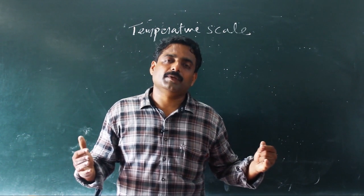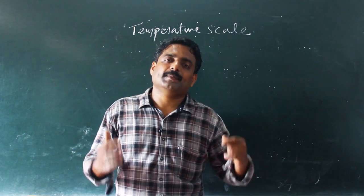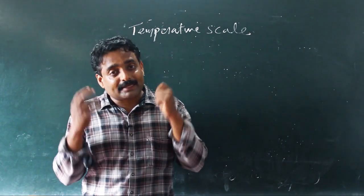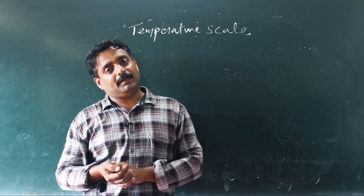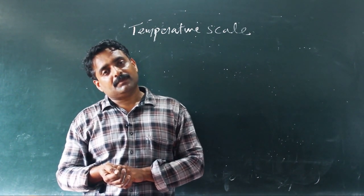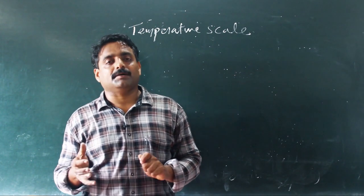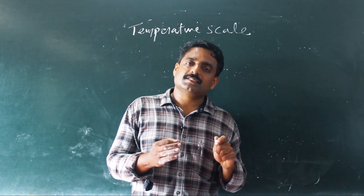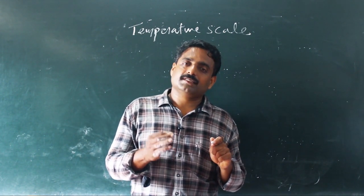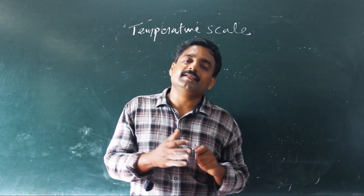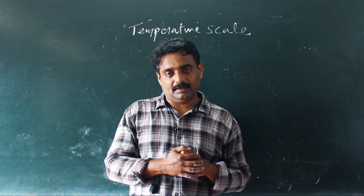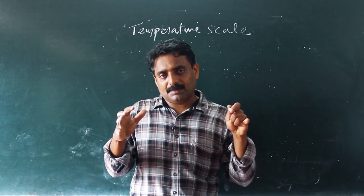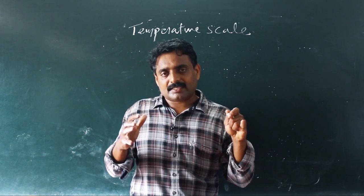That equilibrium is known as mechanical equilibrium. Then, what do you mean by chemical equilibrium? In a system, the concentration of chemical constituents is uniform. Then it is known as chemical equilibrium.